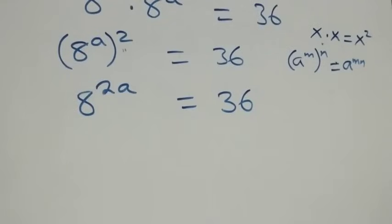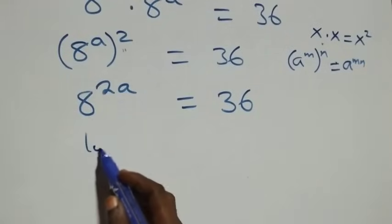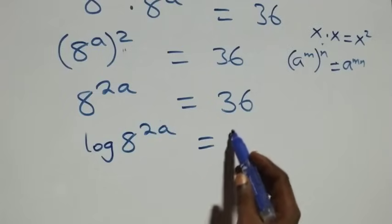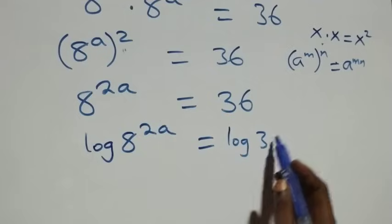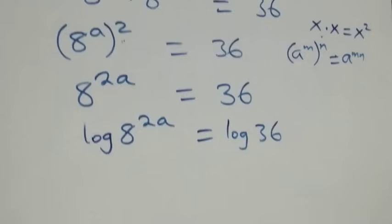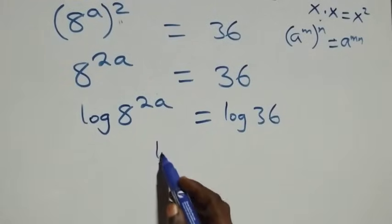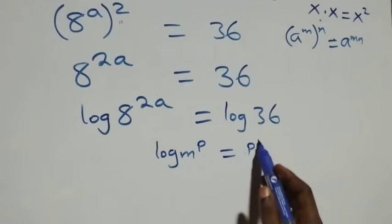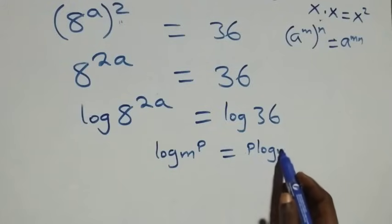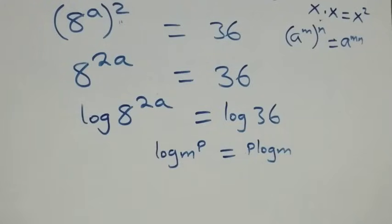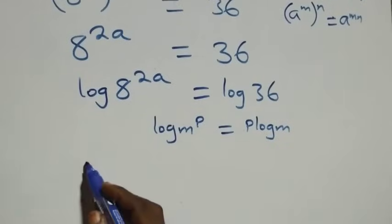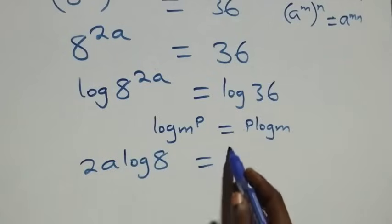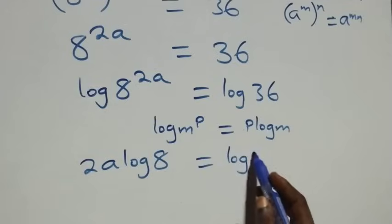The next step: we take the log on both sides. That is, we have log of 8 raised to power 2a equals log 36. We apply the power rule of logarithms: log of m raised to power p is the same as p times log m. So the power 2a comes down, and we have 2a log 8 equals log 36.